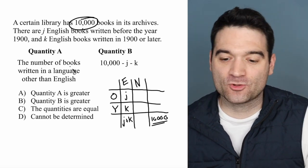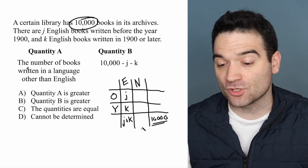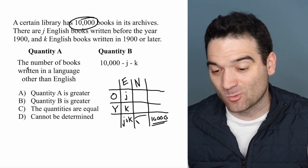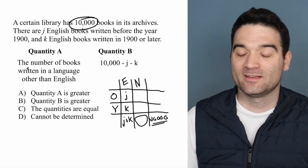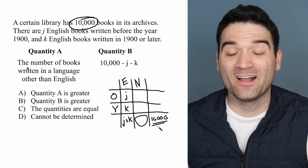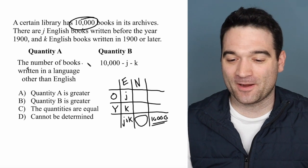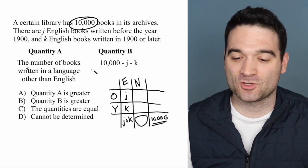And what are we trying to compare? What are the values that we're trying to compare here? The number of books written in a language other than English. So that's this one right here, right? The number of books written in a language other than English is that right there, or the number 10,000 minus J minus K. So we're comparing these two columns with each other.